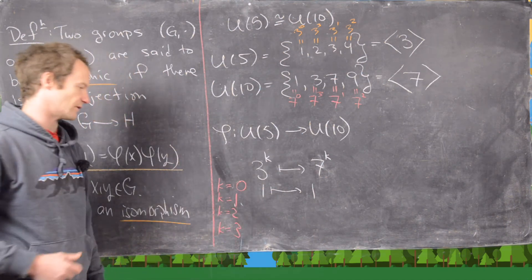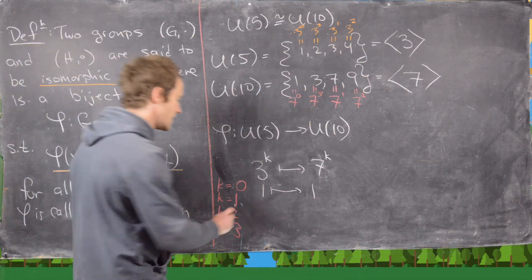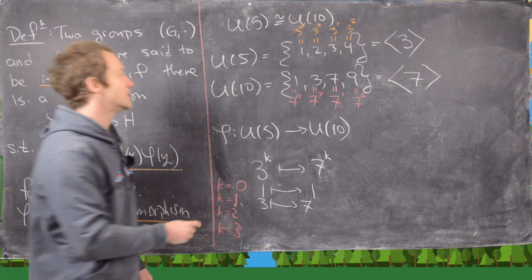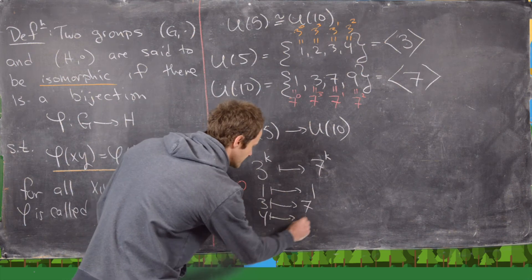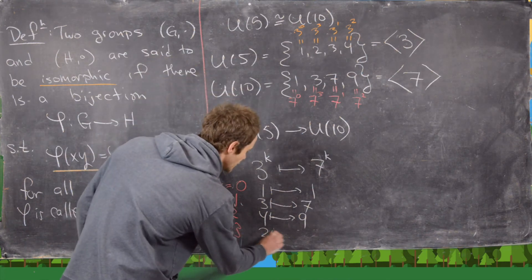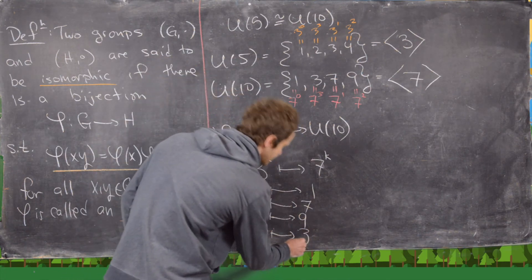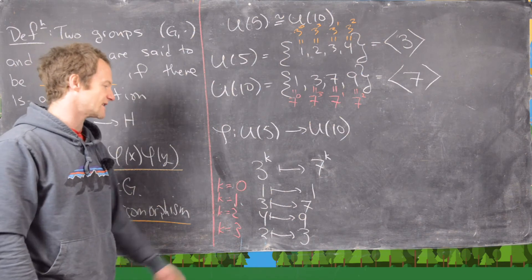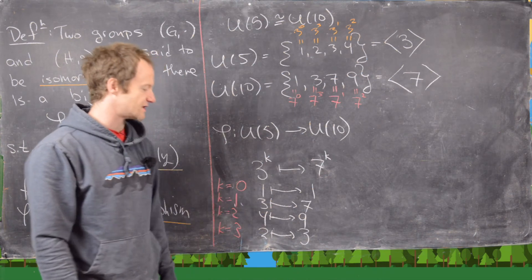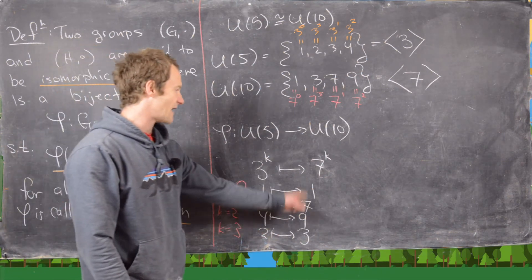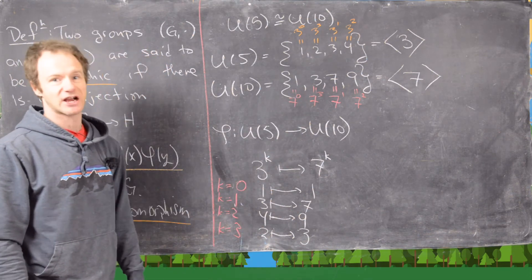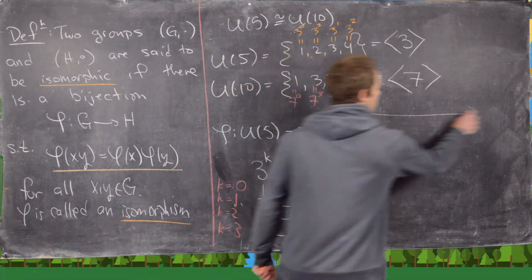From this chart it's easy to verify the map is one-to-one and onto: every element of the domain is sent to a different element of the codomain, and every element of the codomain is mapped onto. So phi is a bijection.